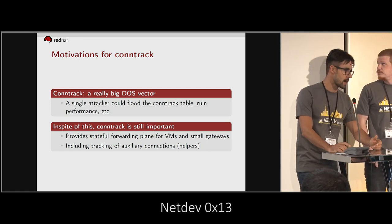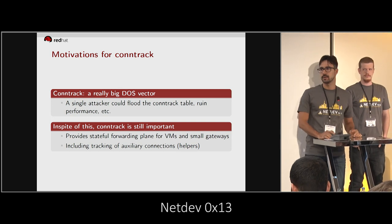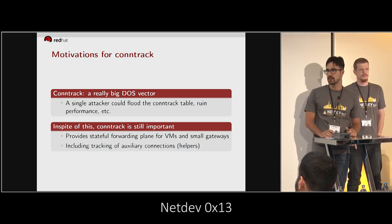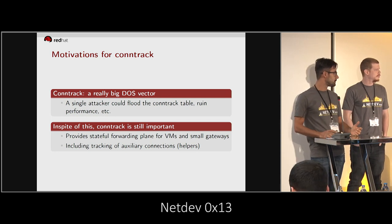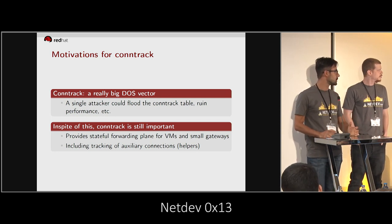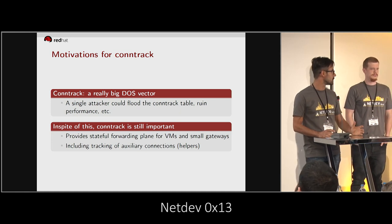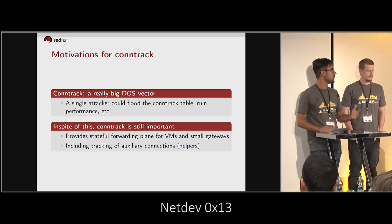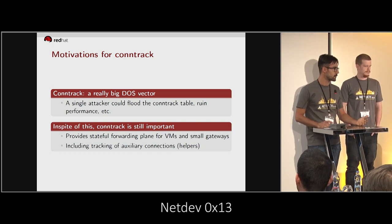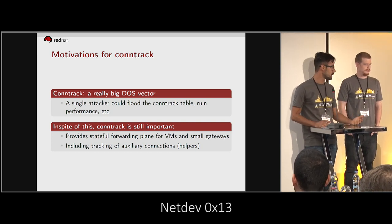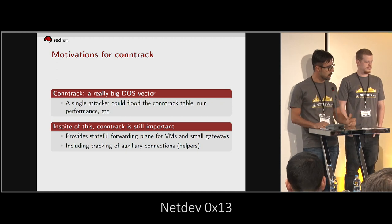So, motivations for conntrack: it's a really big DOS vector. If you have it in your network and if you are not prepared, it may get fueled by some attacker because it's layer 3 and it can be routed. It is routable and some entity outside of your network can just fill it, and then new connections won't get through until older ones expire.